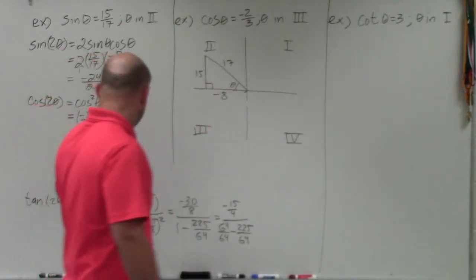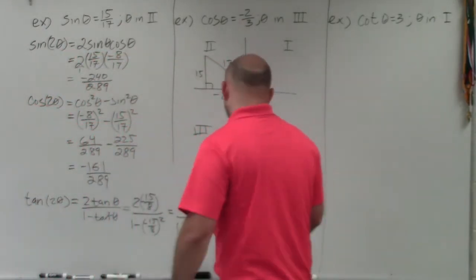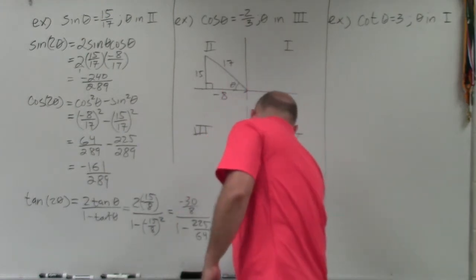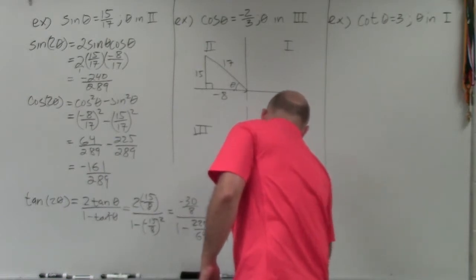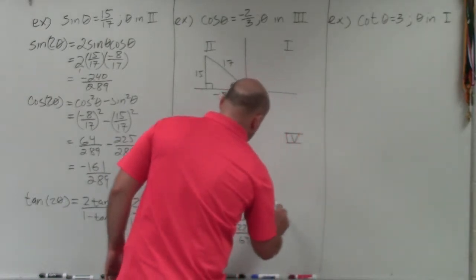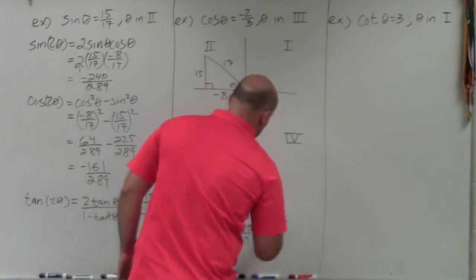64 minus 225, we've already shown, is a negative 161. So that's a negative 161 over 64 divided by a negative 15 over 4.